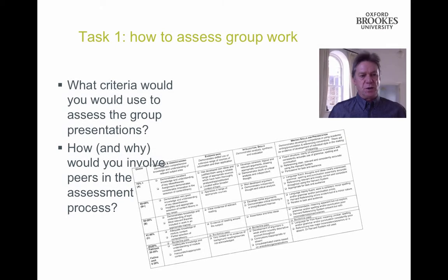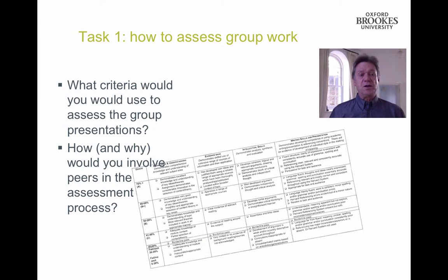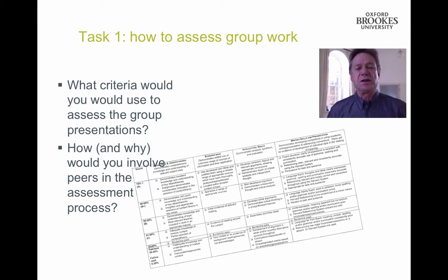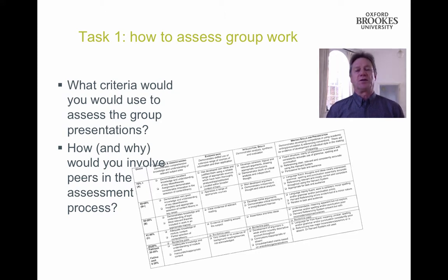Because we've been doing group work in this course we're going to focus on group work assessment, specifically assessing group products and peer assessment. The one reading that you really should do this week is about assessing group work. The main task this week, task one, is related to this reading. Thinking about the group presentations that you produced in week three, we're asking you to think through and present an approach to assessing these sorts of products. Present and discuss your ideas in the discussion forum. What criteria would you use to assess these products? How and why would you involve peers in the assessment process?